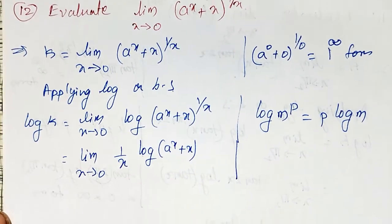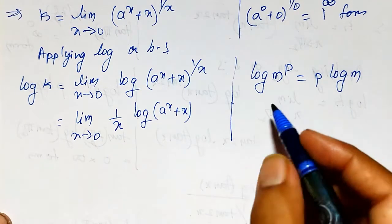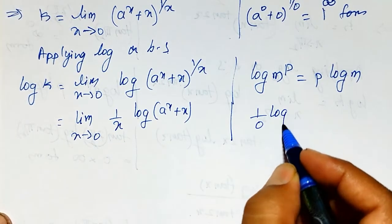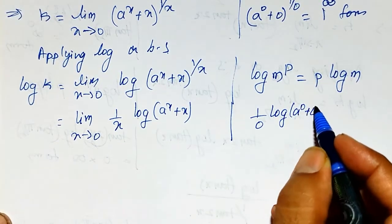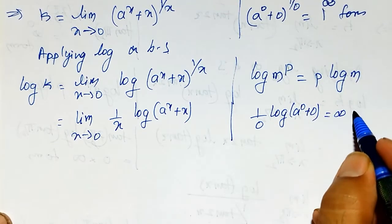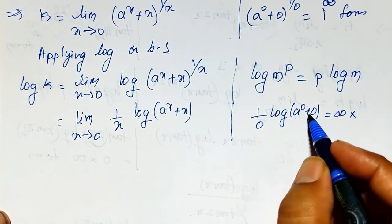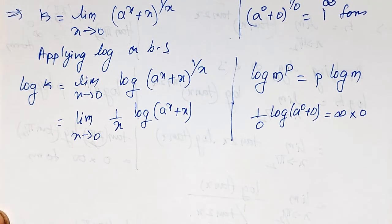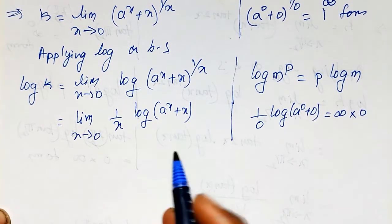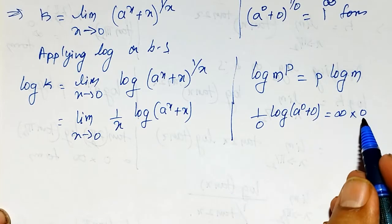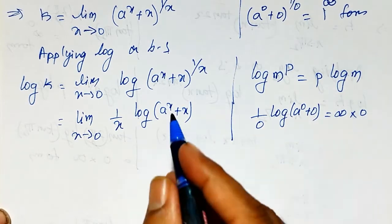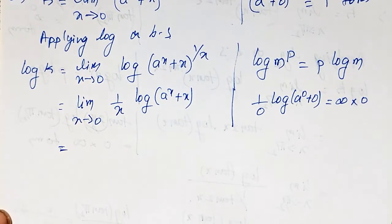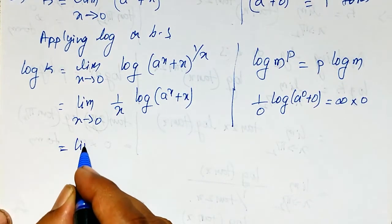Checking again by substituting x equal to 0: we get 1 by 0 times log of (a raised to 0 plus 0), which is infinity times log 1. Since log 1 is 0, this gives infinity times 0 form. It is not possible to apply L'Hôpital's rule directly in this infinity times 0 form — I need to readjust the terms to get a 0 by 0 or infinity by infinity form.